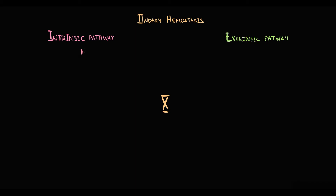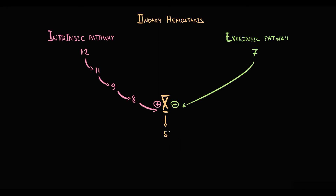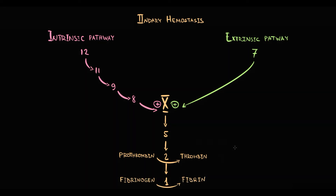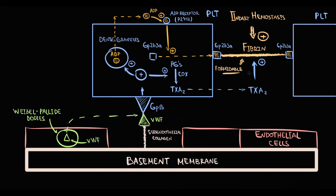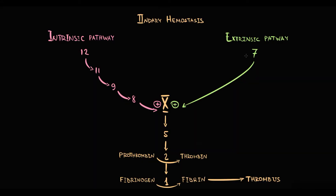The intrinsic pathway consists of factors 12 to 8; the extrinsic pathway consists of just factor 7. Activation of factor X results in activation of factors 5, 2, and 1. Factor 2 is prothrombin, which becomes thrombin upon activation. Factor 1 is fibrinogen, which becomes fibrin. Fibrin converts the platelet plug into a formidable thrombus. Prothrombin time and INR assess the extrinsic pathway; partial thromboplastin time assesses the intrinsic pathway.